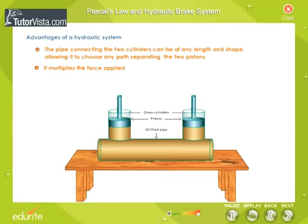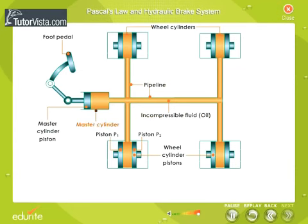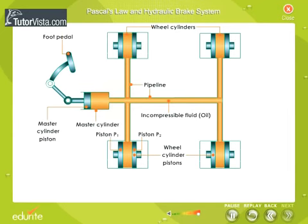The other advantage of a hydraulic system is that it multiplies the force applied. Here you can see the hydraulic brake system of an automobile. It consists of a pipeline containing fluid, one end of which is connected to the master cylinder fitted with a piston attached to the foot pedal. The other end of the pipeline is connected to the wheel cylinder, having two pistons, P1 and P2, attached to the brake shoes. The area of cross-section of the wheel cylinder is greater than the area of cross-section of the master cylinder.